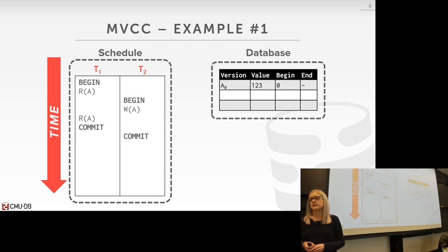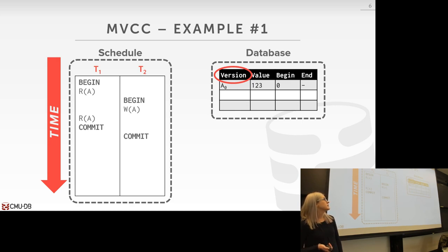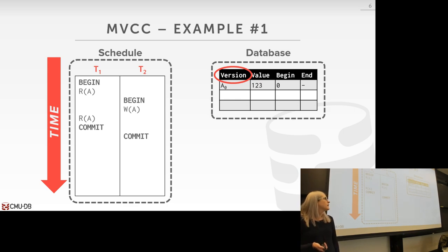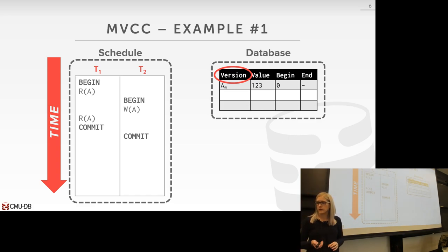In this first example, we have a version field assigned to A0, meaning object A version 0. Some earlier transaction wrote values 1, 2, 3 with a timestamp of 0. We also have begin and end timestamp fields — these can be logical, physical, or hybrid timestamps, as long as they're always increasing and valid as you learned in previous lectures.